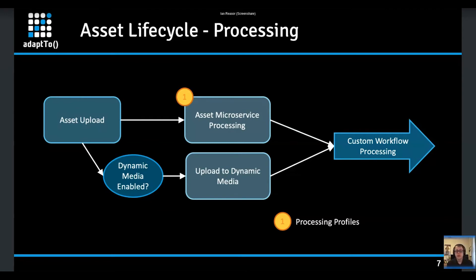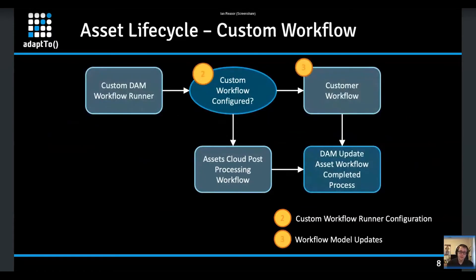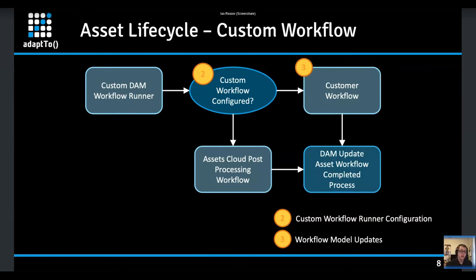Once asset processing is done by the asset microservice and Dynamic Media, we move into custom workflow processing — that's where the custom DAM workflow runner comes into play. It looks at its configuration, which can be either the OSGi configuration for the service or folder properties in the DAM. The simplest way most customers will use this is to enable it via a folder in the UI. To support migration and full parity with workflow launchers, we also allow an OSGi configuration using a regular expression.